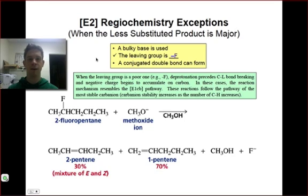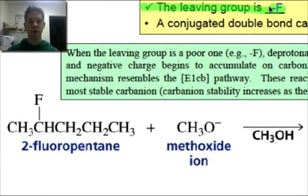A second exception to our rule occurs when the leaving group is fluoride. The special thing about the fluoride anion is that it's a particularly bad leaving group. So elimination reactions involving alkyl fluorides typically have to go by the E1CB pathway in which deprotonation happens before dissociation of the leaving group. In fact, deprotonation happens so much faster than leaving group dissociation that the anions that form by deprotonation are able to reach equilibrium.